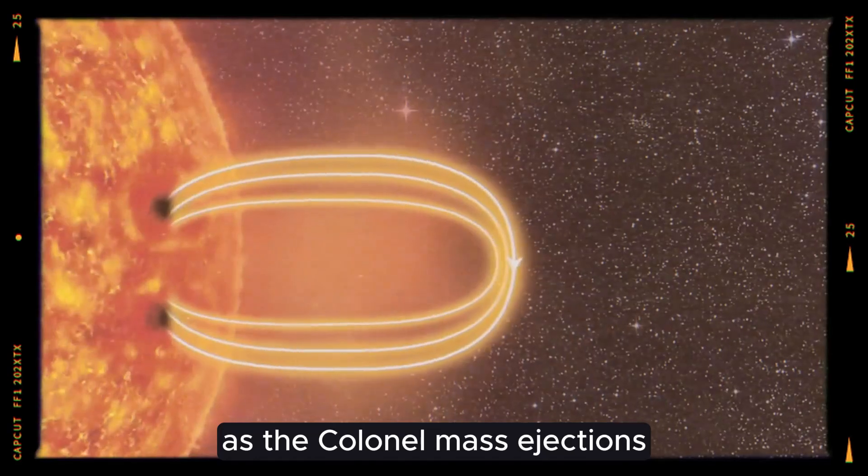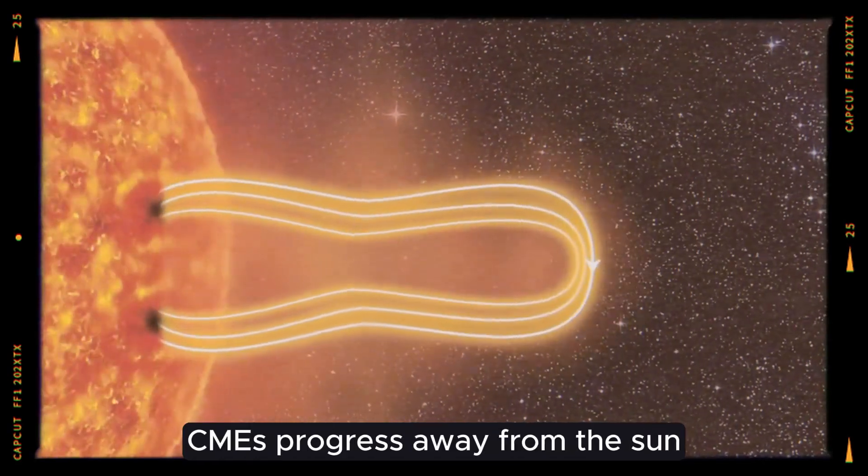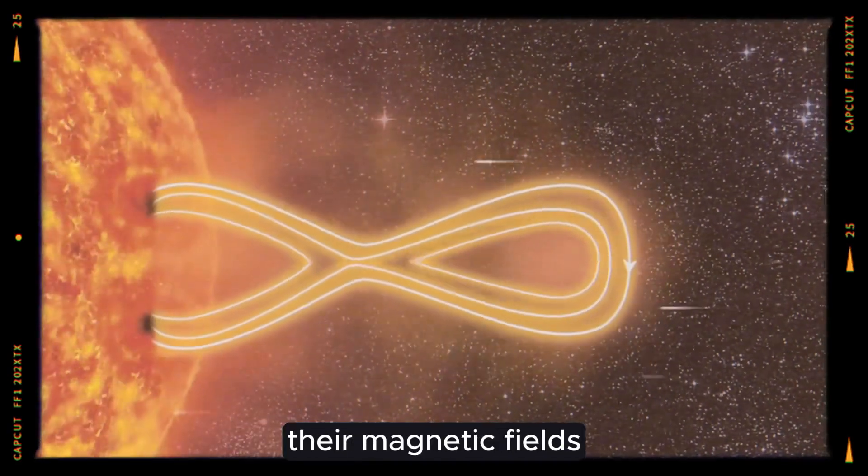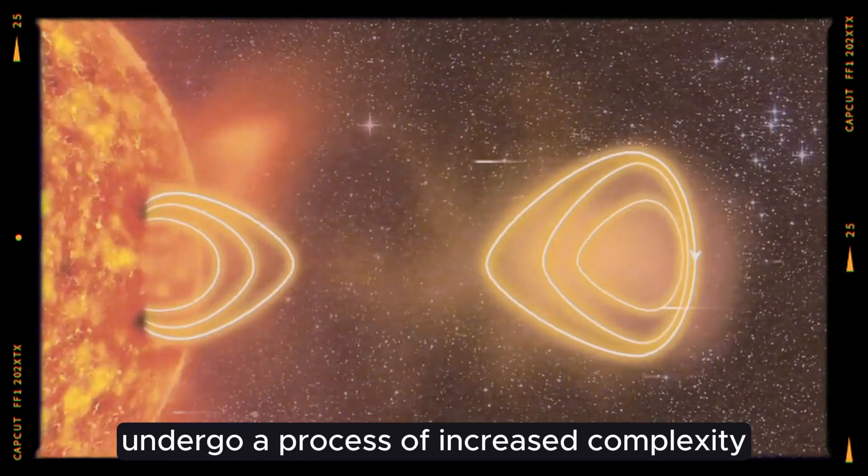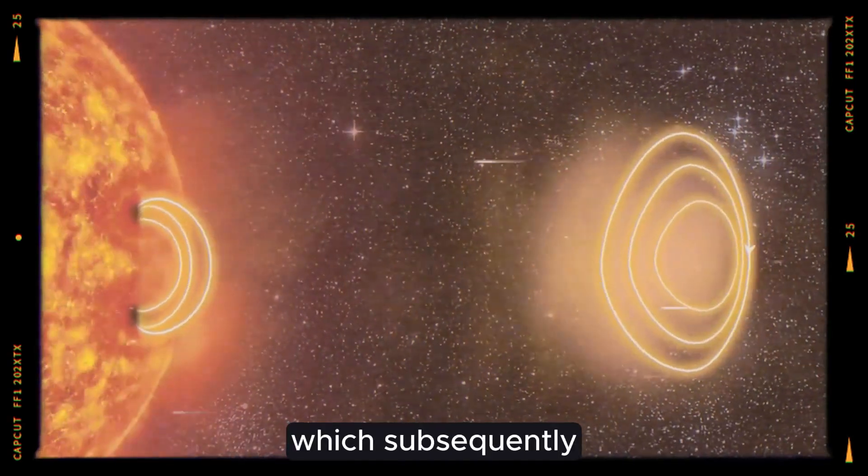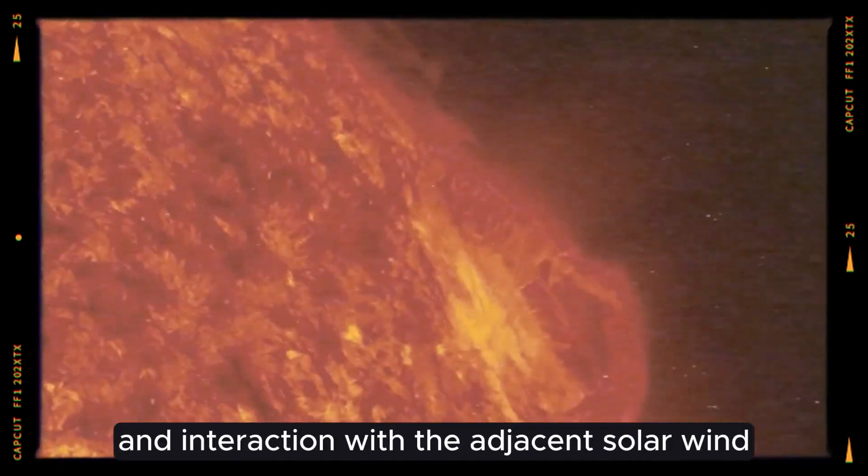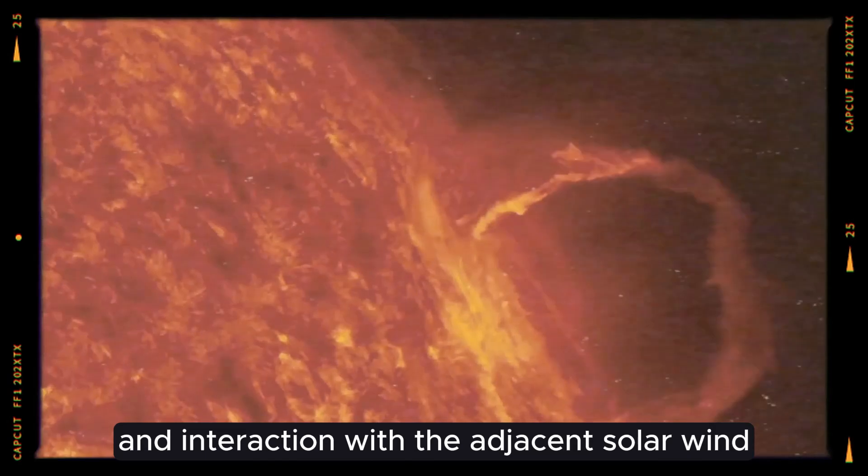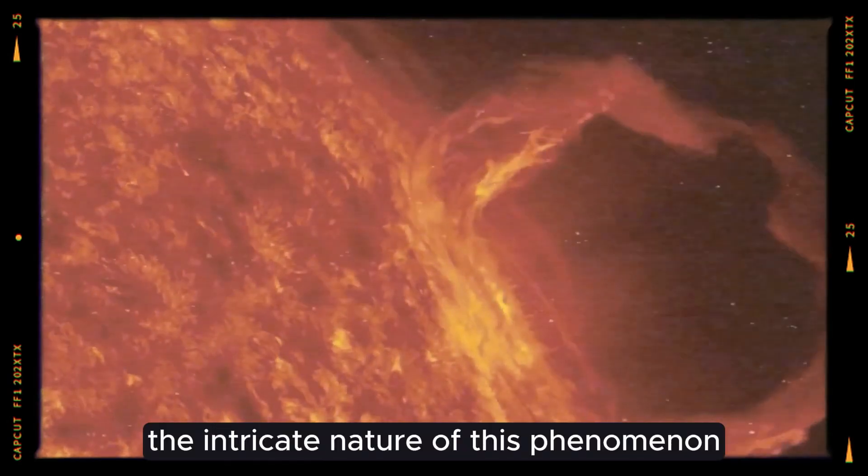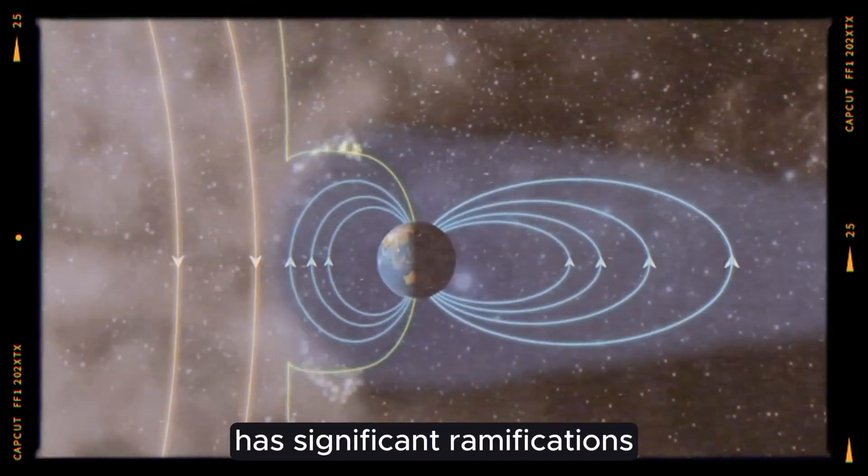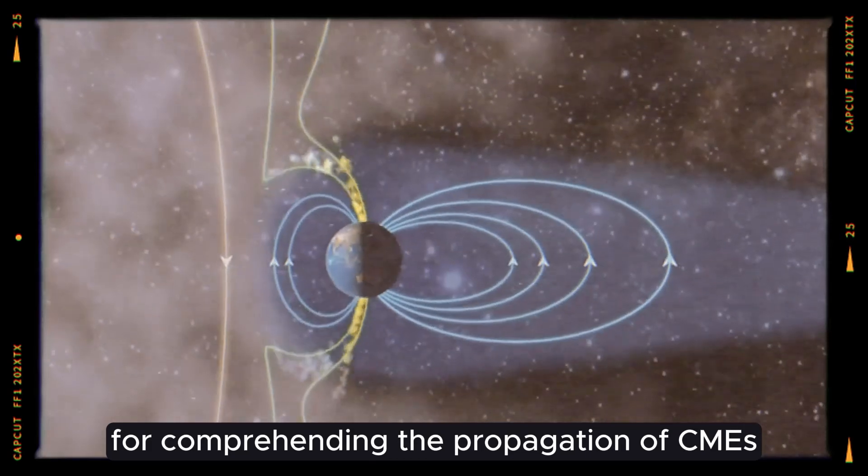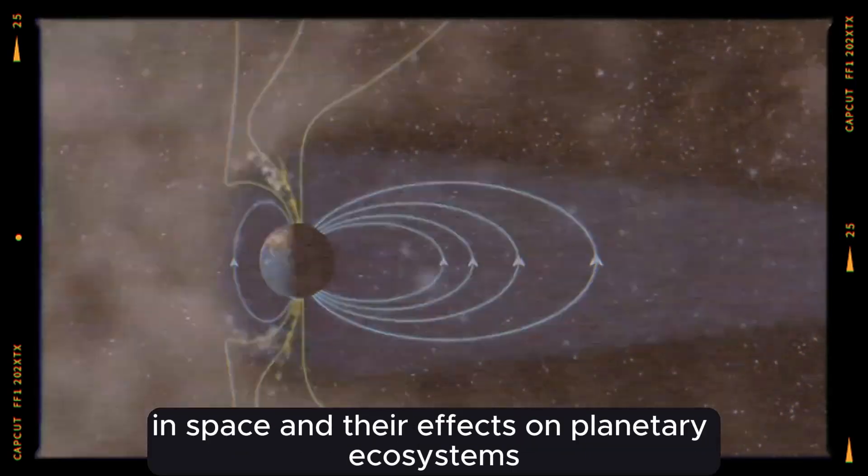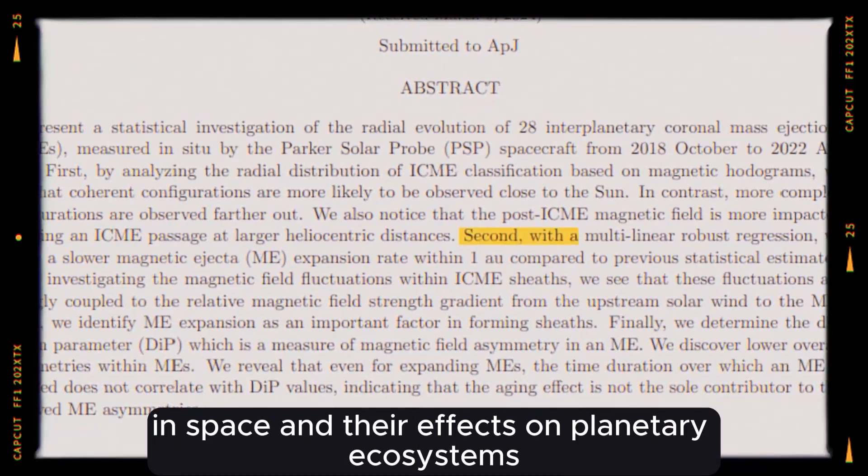As the coronal mass ejections, CMEs, progress away from the Sun, their magnetic fields undergo a process of increased complexity, which subsequently impacts their development and interaction with the adjacent solar wind. The intricate nature of this phenomenon has significant ramifications for comprehending the propagation of CMEs in space and their effects on planetary ecosystems.